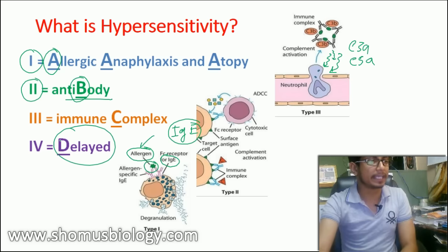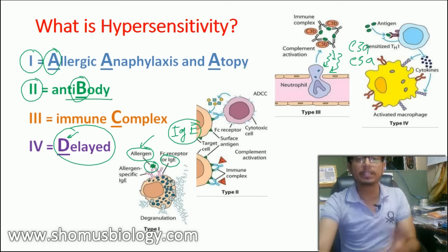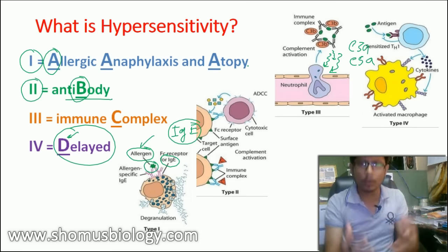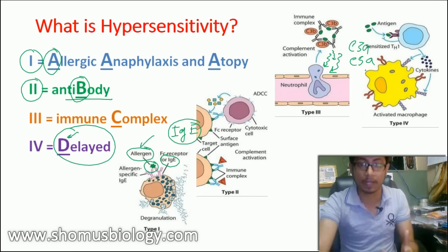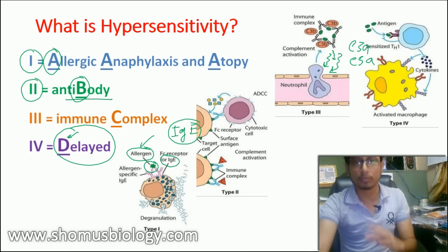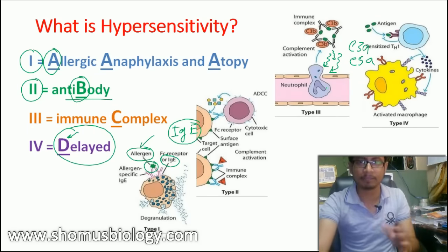The fourth kind is delayed hypersensitivity — easy to remember with 'D' for delayed. This reaction takes place in two stages. The first stage involves activating more and more T helper cells. Once activated, those T helper cells will in future activate a large number of macrophages. Macrophages are dangerous phagocytic cells that, once activated, can cause serious harm to our own tissue.